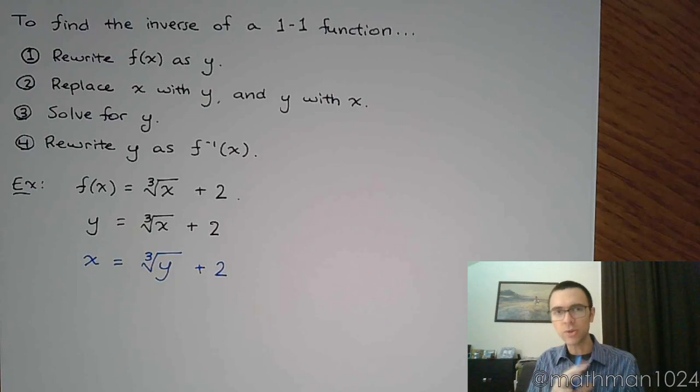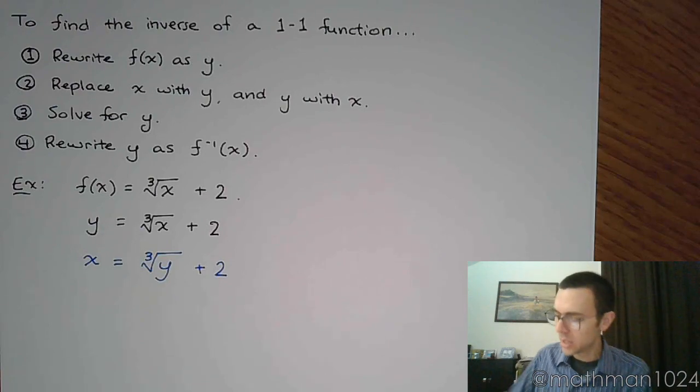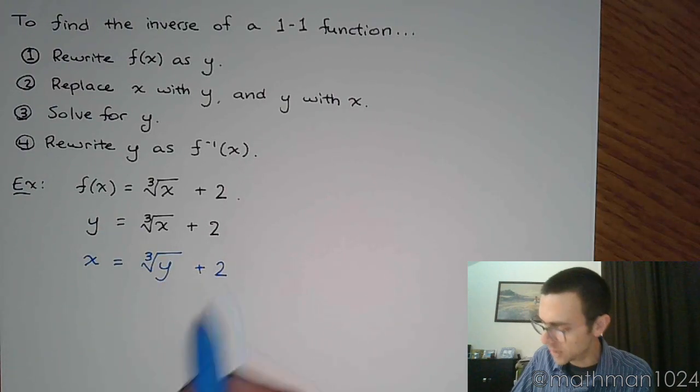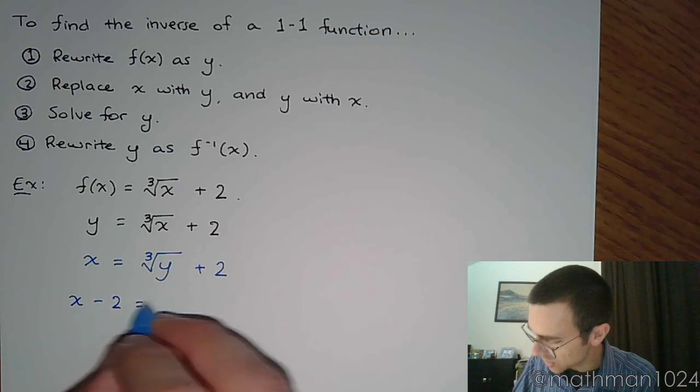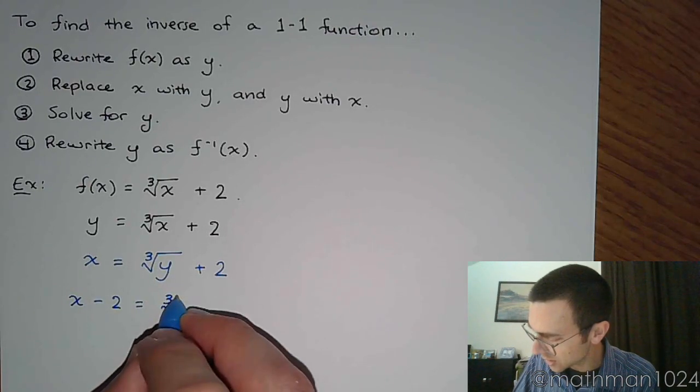And instead of x, I'm going to write y. And so from here, now that I've made those replacements and x becomes y, y becomes x, I'm going to solve this equation for y. Alright, so here's the only place I have y. So I need to subtract the 2 first.